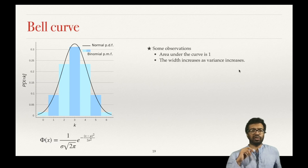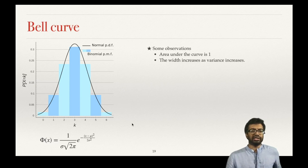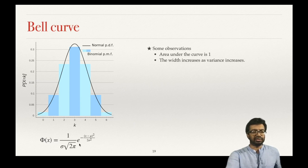One more property: since this is a probability distribution, if you integrate from negative infinity to positive infinity — finding the area under this bell curve — that area is going to be 1. The constant 1 over root 2 pi has been set up exactly to ensure that the area under this curve is 1.